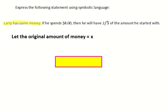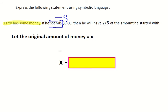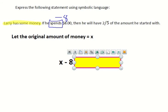We are told that Larry spends eight dollars. Spends means taking away, so we're going to take away eight from the amount of money that Larry has initially. I'll jot that down here: x minus eight.